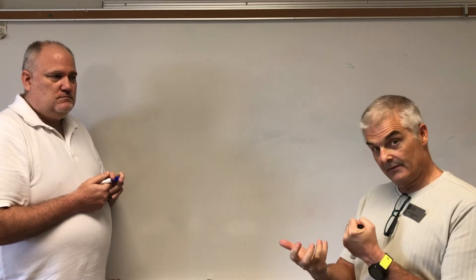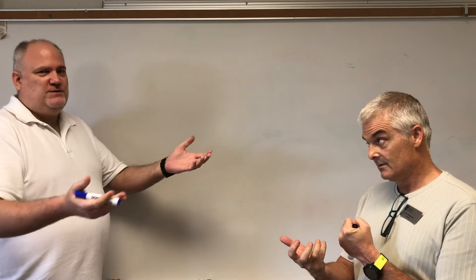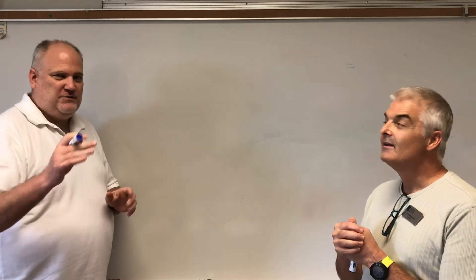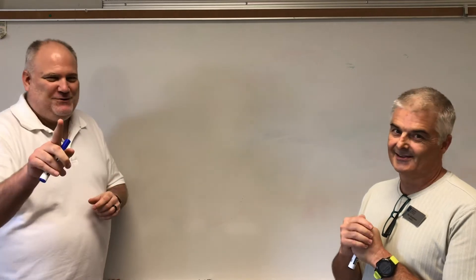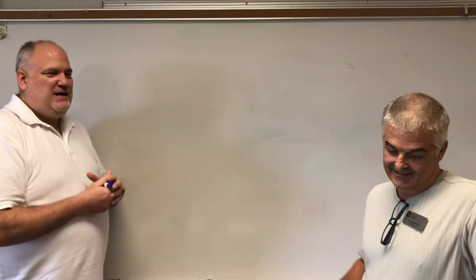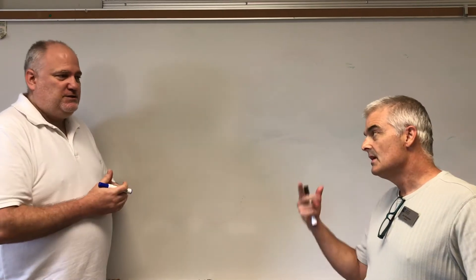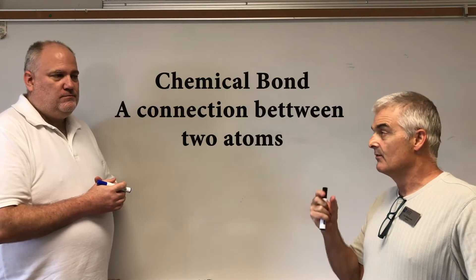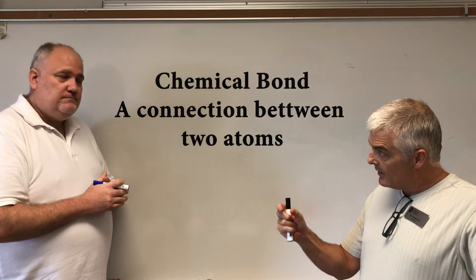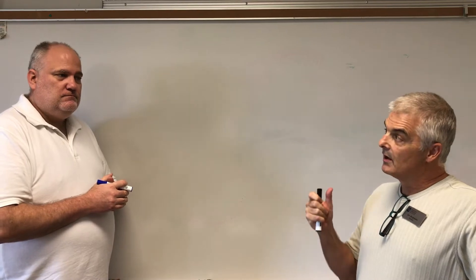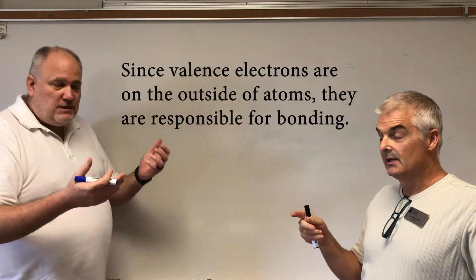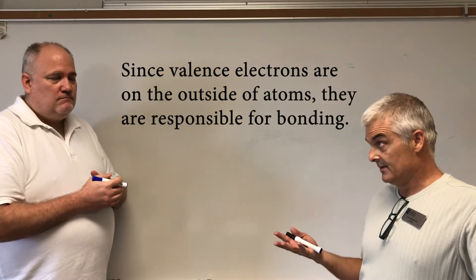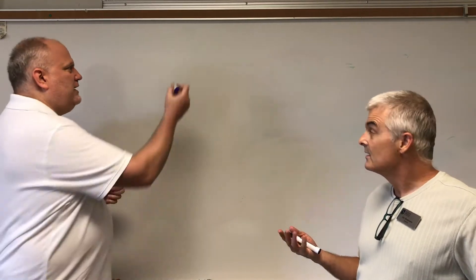Your nucleus, which is positive, is going to want to attract my negative electrons. Opposites attract. So a bond is a connection of one atom to another, and the key players are the valence electrons - the outer shell electrons. Their goal is to get eight electrons. That's really it.